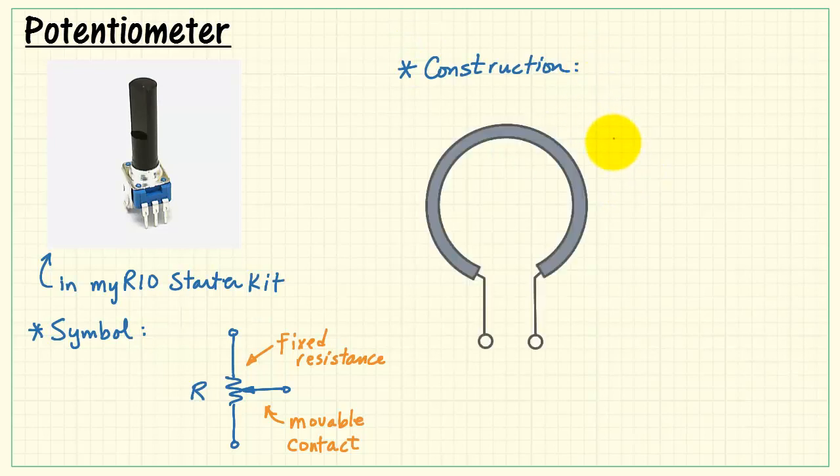Looking at the insides of the potentiometer, we would see a circular ring of carbon, or carbon-like material, with the two terminals appearing on either side of the potentiometer. So this is that fixed resistance.